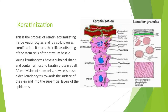This is the process of keratin accumulating inside keratinocytes and is also known as cornification. It starts their life as offspring of the stem cells of the stratum basale. Young keratinocytes have a cuboidal shape and contain almost no keratin protein at all. After division of stem cells, new cells push older keratinocytes towards the surface of the skin and into the superficial layers of the epidermis.